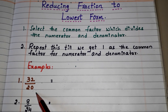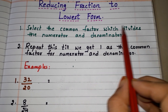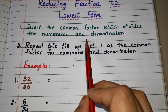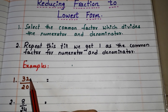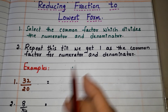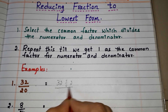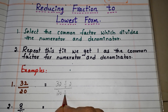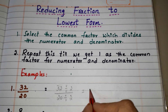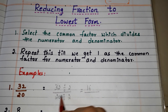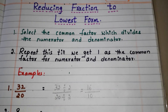Here, what we have to do is we have to select the common factor which divides the numerator and denominator. Here we can select the factor 2, why? Because 2 divides 32 as well as 20. So let's divide: 32 divided by 2, by 20 divided by 2, and write the quotients here. 32 divided by 2 is 16, and 20 divided by 2 is 10.